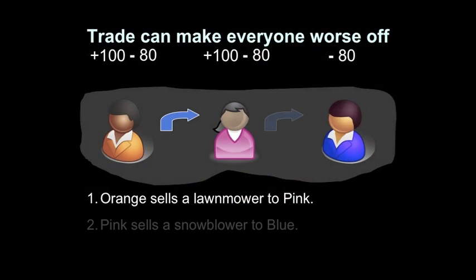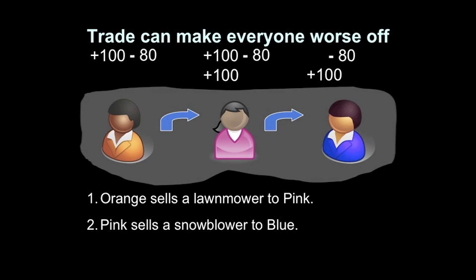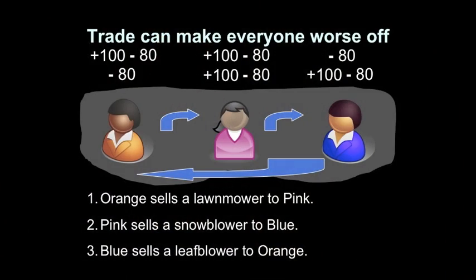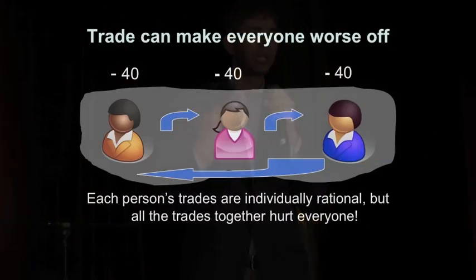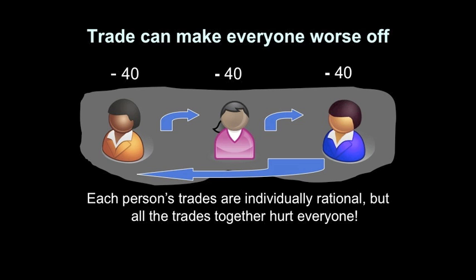Now we're going to see another trade. Pink sells a snowblower to blue — they each get $100 in benefits. Pink sells it for $100; blue would be willing to pay $200, so she gets $100 in net benefits. But when blue starts using the snowblower, air pollution gets worse — an additional $80 in health care costs for everyone. And now we just complete the circle: blue sells a leaf blower to orange. They get $100 in benefits each. Air pollution gets worse, an additional $80 in health care costs for everyone. If you add up any one of these columns, after all three trades, everybody ends up at minus 40. This is the tragedy of the commons, the prisoner's dilemma — each person's trades are individually rational, but altogether they hurt everybody.